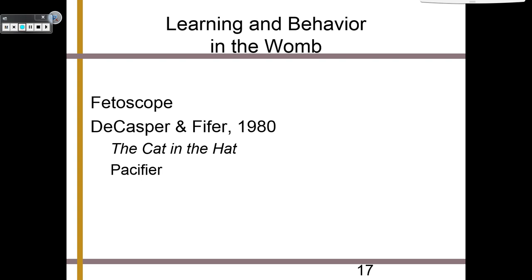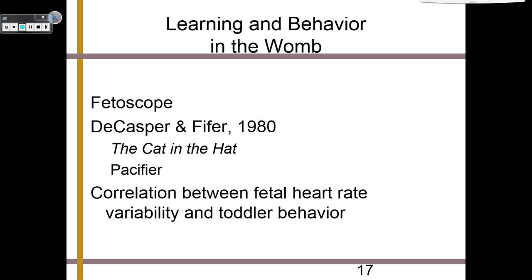Of course, these were in the late stages of the trimester. We also know there is a correlation — remember, that's just a relationship — between fetal heart rate variability and toddler behavior. What this means is that if while you're pregnant you have a very active pregnancy, feeling like the baby is doing gymnastics in there, then you're probably going to have a very active baby.